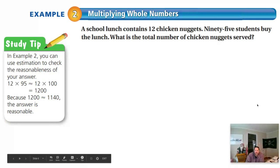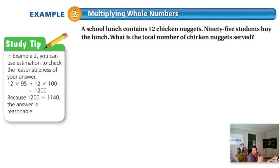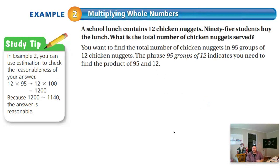Here we have another type of problem. If you have a school lunch that contains 12 chicken nuggets, that's a lot of nuggets for lunch, and 95 students buy the lunch, how many total chicken nuggets are served? What operation would you be doing to solve this problem? You might see the word total and think it's addition, but it's actually multiplication.